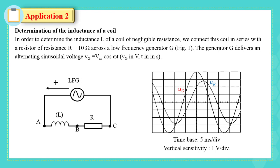The generator G delivers an alternating sinusoidal voltage Ug equal to Vm cosine omega T, where Ug is in volts and T is in seconds. Figure 2 represents the oscillograms of the voltage Ug across the generator and Ur, the voltage across the resistor, where the horizontal sensitivity is equal to 5 ms per division, and the vertical sensitivity Sv is equal to 1 volt per division.